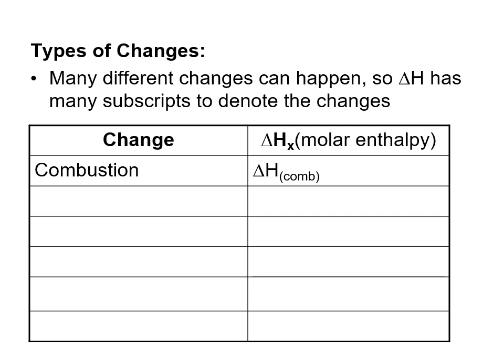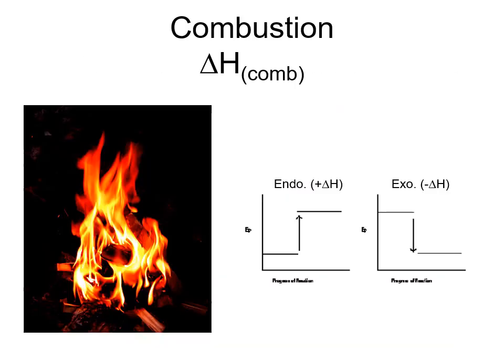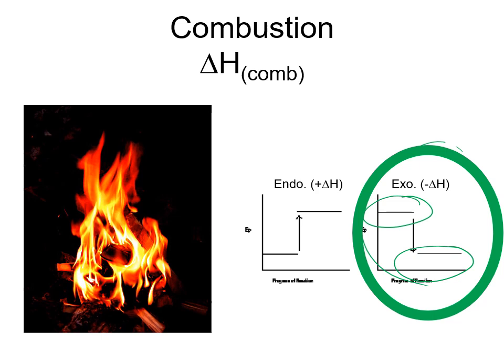Here are some examples of different types of changes and their molar enthalpies. Because there are many different types of changes, a subscript on delta H describes the specific change, and there are generally standard ones used. For example, combustion — written as a short form subscript — is an exothermic change because you're starting with reactants and getting products while releasing heat, giving a negative delta H.